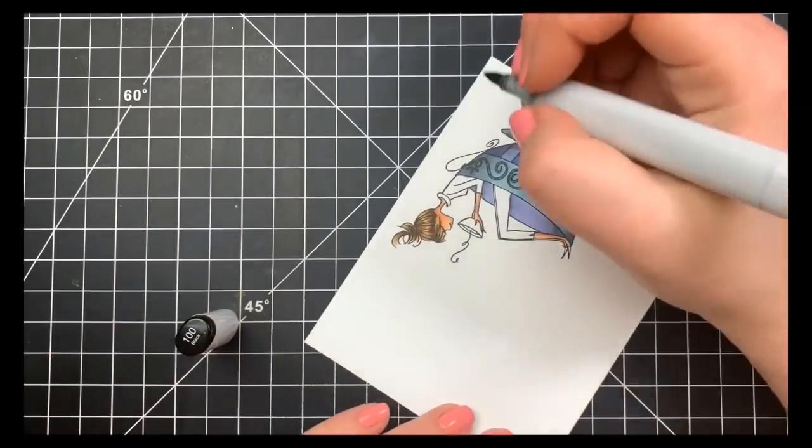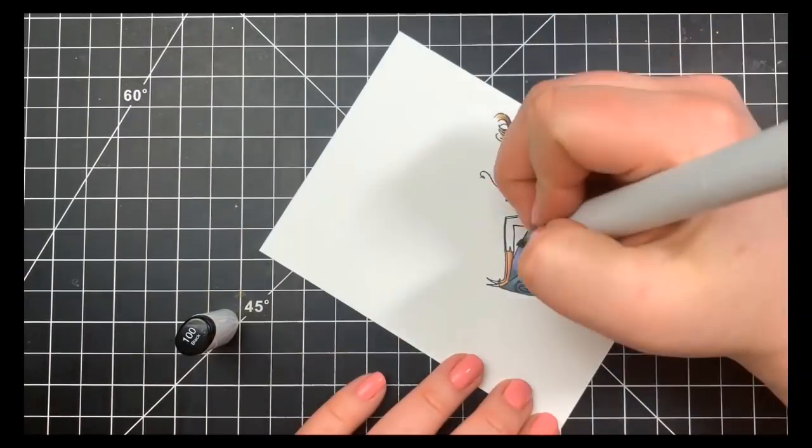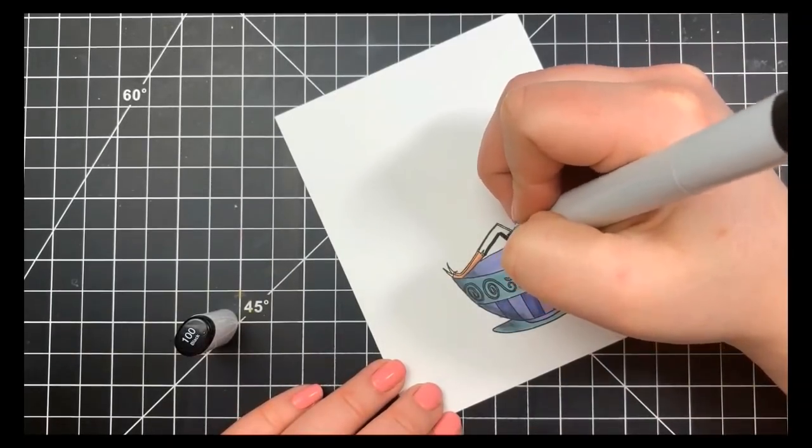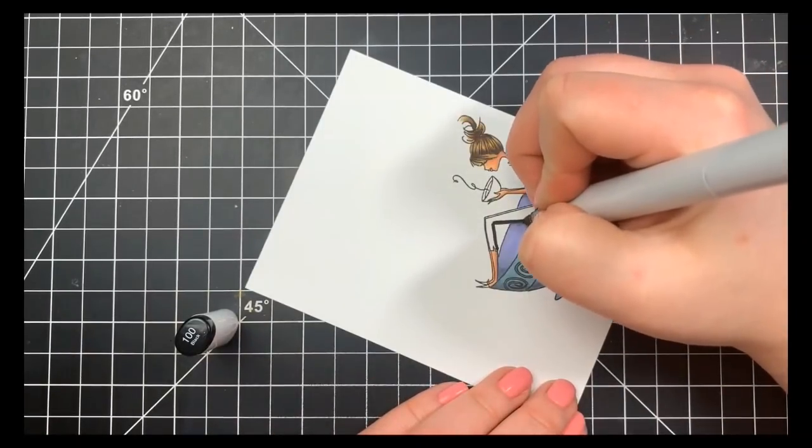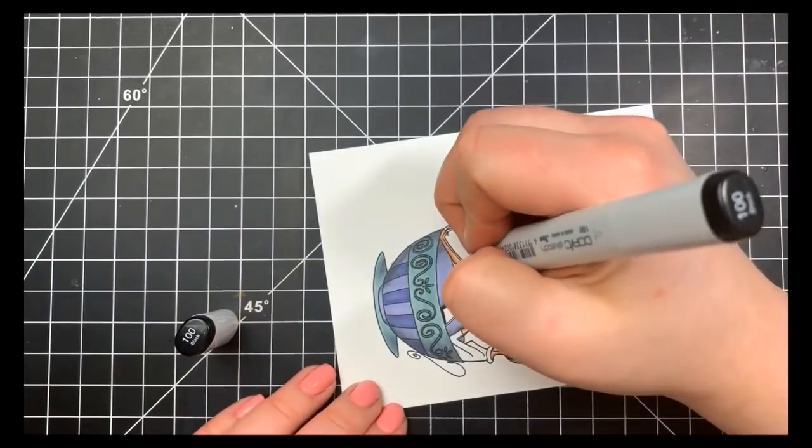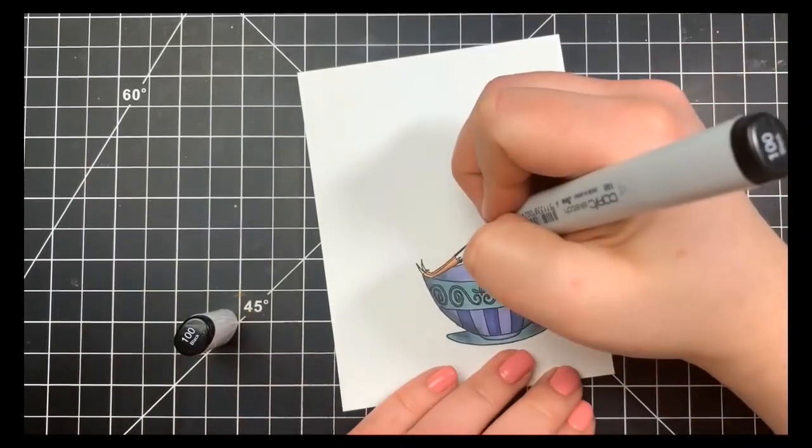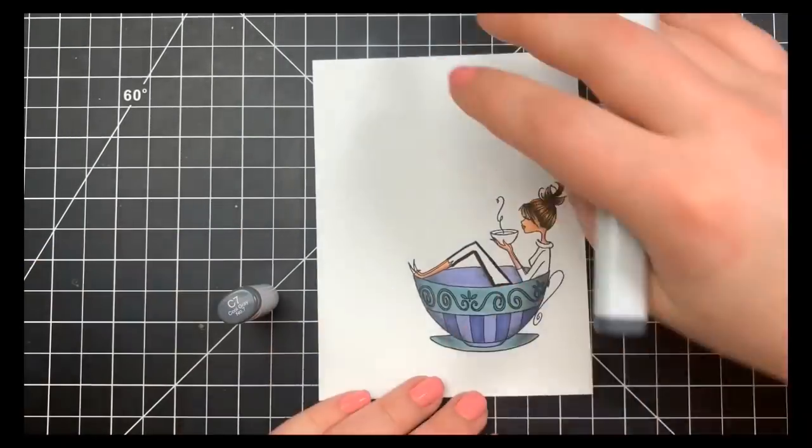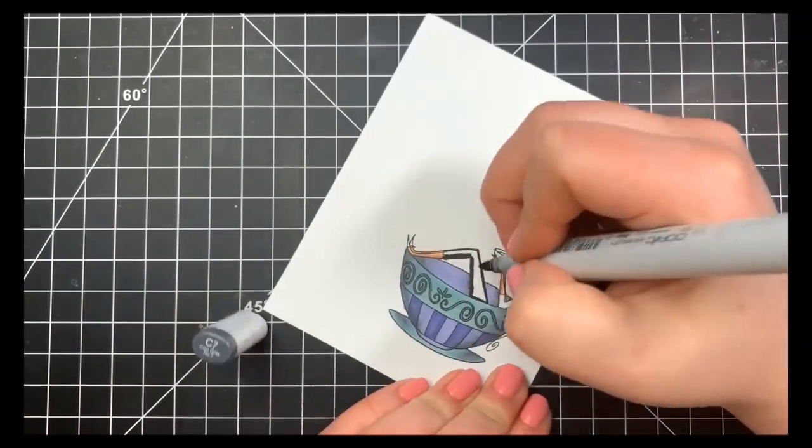Next for her pants, I wanted these to at least appear to be black so I am using my black marker, but I'm also going to be doing some shading with some darker C markers. So I'm just putting a little bit of shading on the bottom part of her pants for that one leg that's in front, and for the leg behind that I'm just coloring that in solid.